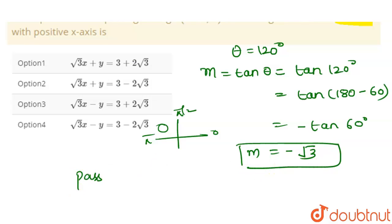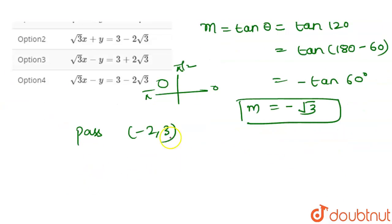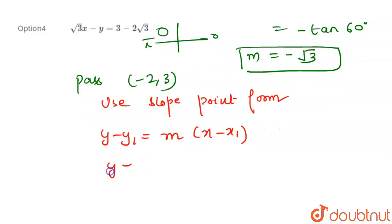Right, so we can use slope-point form here. Using slope-point form, we can get the equation of the line. So y minus y₁ equals m times (x minus x₁). Right, so y₁ is 3, m is minus root 3.